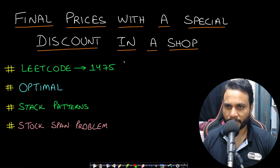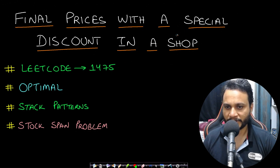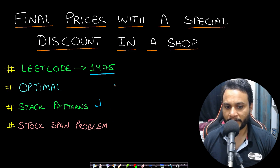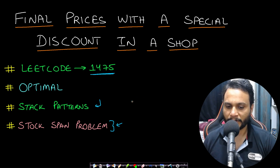Hello guys, welcome back to TakeDose. In this video we will look at final prices with a special discount in a shop problem, which is LeetCode number 1475. We will look at all the monotonic stack patterns in this problem, and I recommend doing the stock span problem as well. The link for this problem will be in the description below and also in the info button.